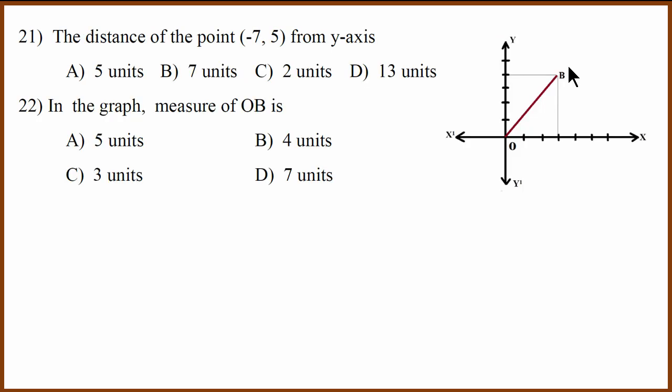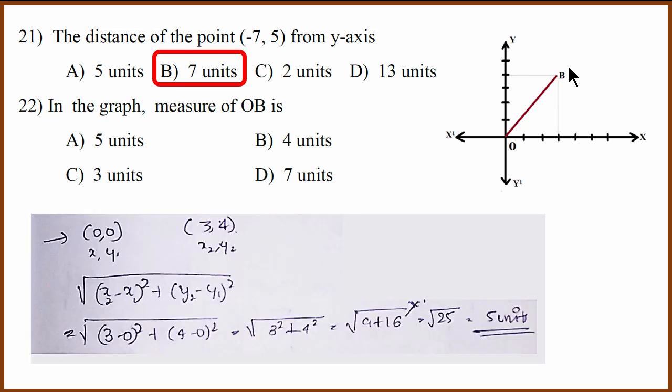Now the distance of the point from y-axis is x coordinate and the distance is always positive. Therefore it is 7 units. And what is the graph? In the graph, we know the point, one point is 0, 0. Another point is 3, 4. If you use the distance formula, you can show that the distance is 5 units. So the correct answer is 5.